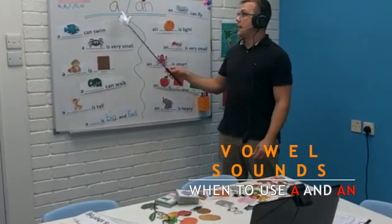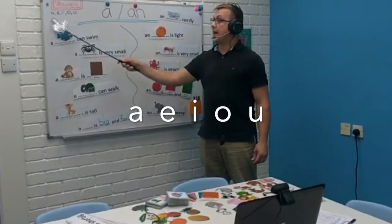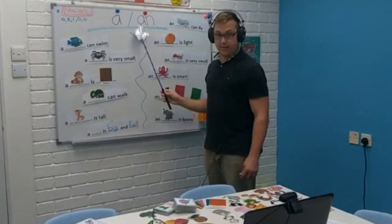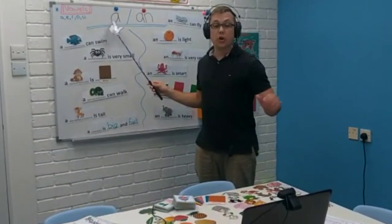Okay, so again, a and an. If it is a, e, i, o, or u, we use an. If it's any other consonant, we use a.